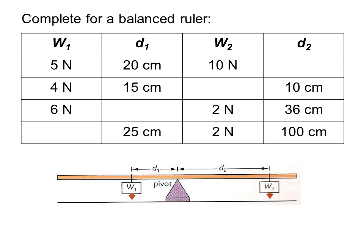So we pick an example here. If you look at the first row, if on the left you have a force of 5 newtons and a distance of 20 centimetres, multiplying those two numbers together gives you 100. That's the moment on the left. So to balance it on the right, you must also have the two numbers multiplying to make 100. Therefore, 10 centimetres times 10 would be 100 and be balanced.